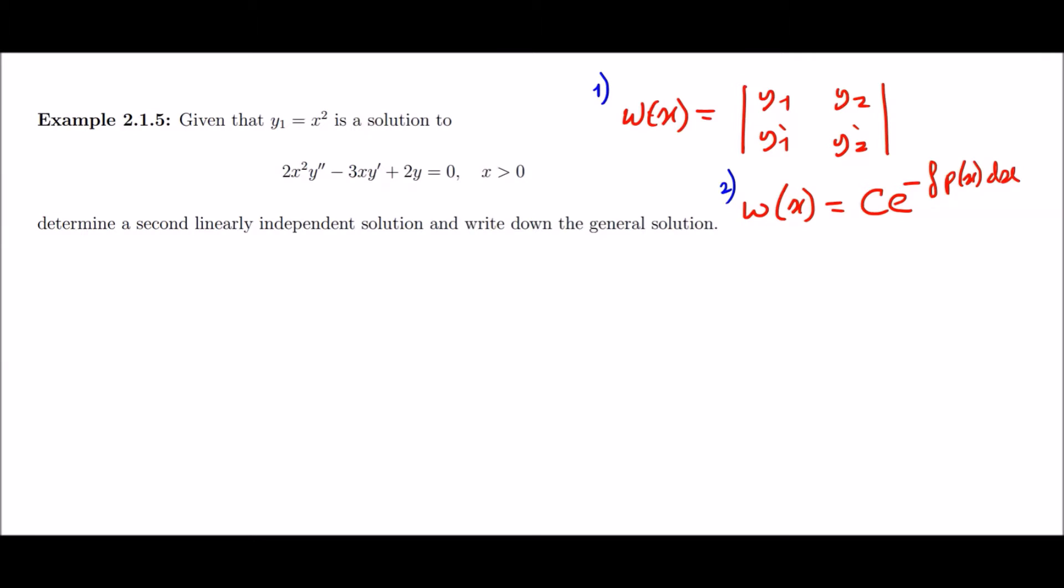Sometimes in a second order ODE equation we're already given one solution. In this case it tells us that the first solution is x squared to the second order homogeneous ODE. Now there's always one key buzzword which you always need to think of when we need to find a second solution.